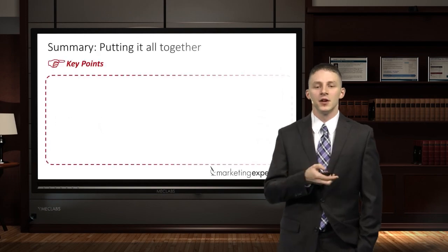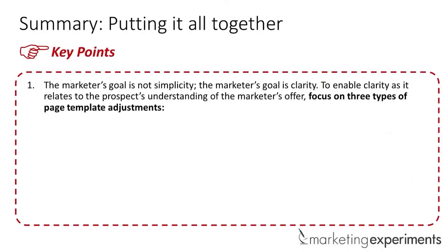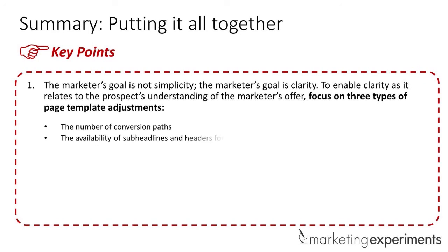So let's do a quick review with five minutes left. Remember: we're not after simplicity — simplicity is a tool to help us get to clarity, which is the prospect's understanding of the offer. That's what powers somebody up the funnel. To do that, we can make three types of changes to our page templates: optimize the number of conversion paths by finding common denominators among prospects; ensure subheadlines or headers guide visitors to quickly find relevant content; and sequence the content so visitors connect to their relevant section as soon as possible, creating a single flow of conversation.